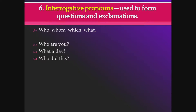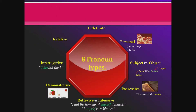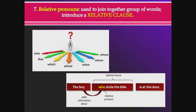Interrogative pronouns are another easy category — they are question pronouns used to form questions or exclamations. They are: who, whom, which, and what. Examples: 'Who are you?' or the exclamation 'What a day!' or 'Who did this?' These four words — who, whom, which, what — are the interrogative pronouns.